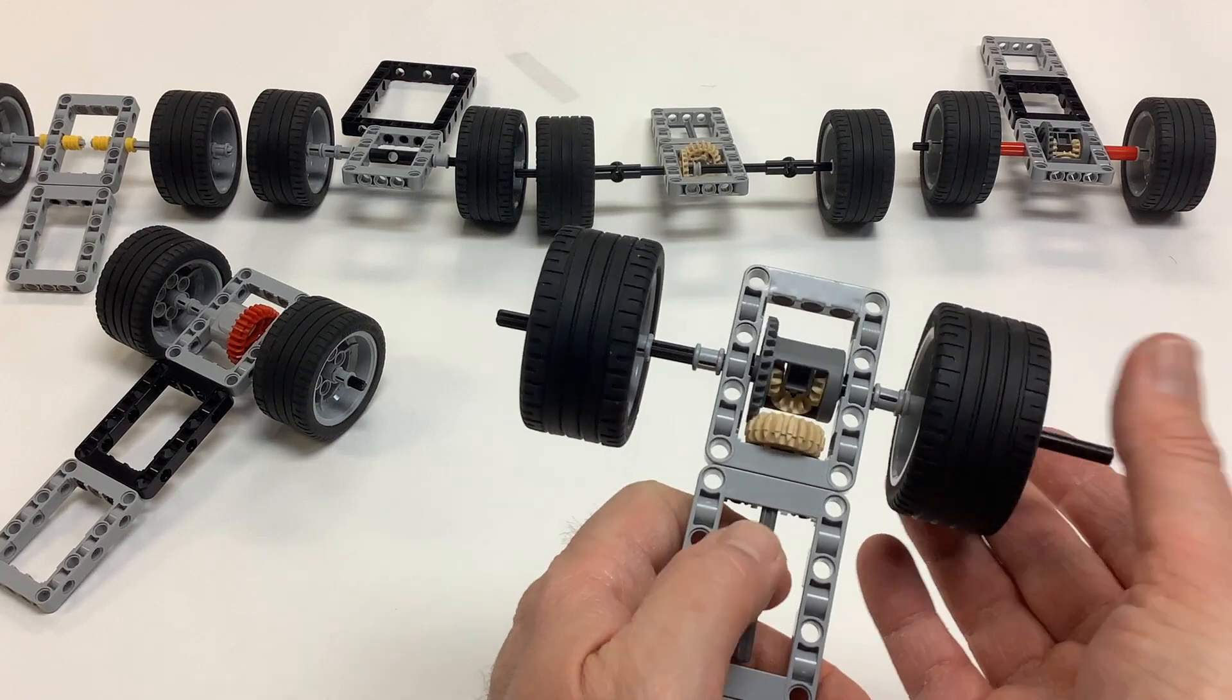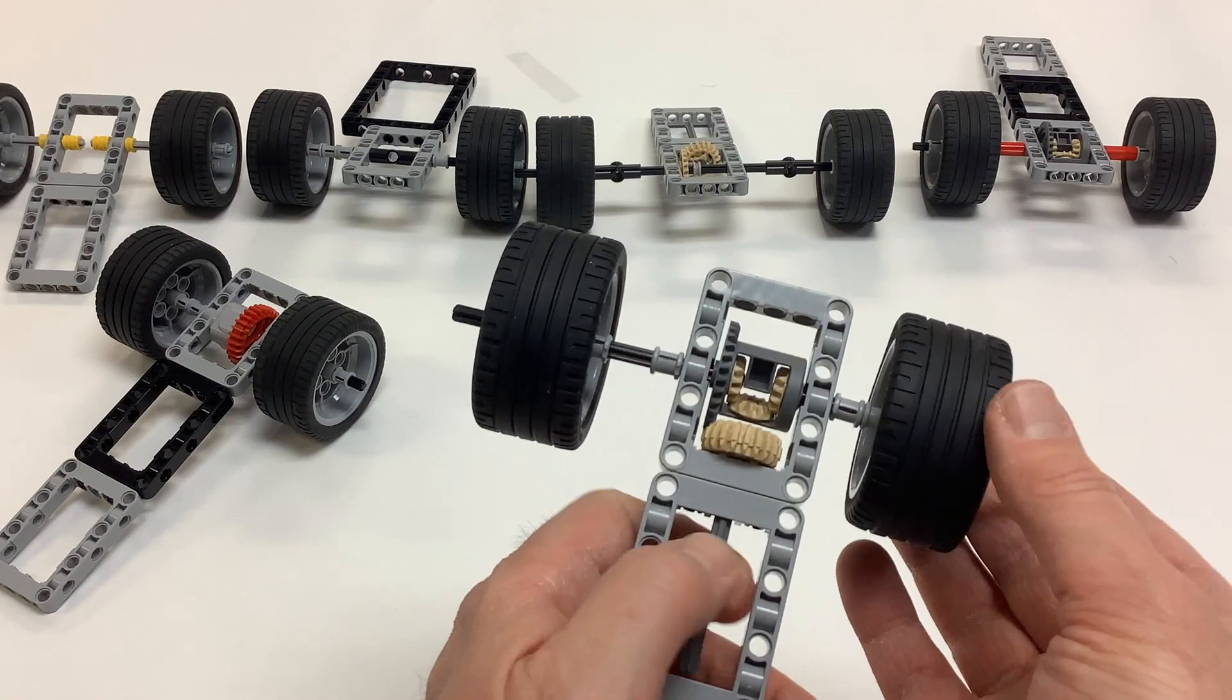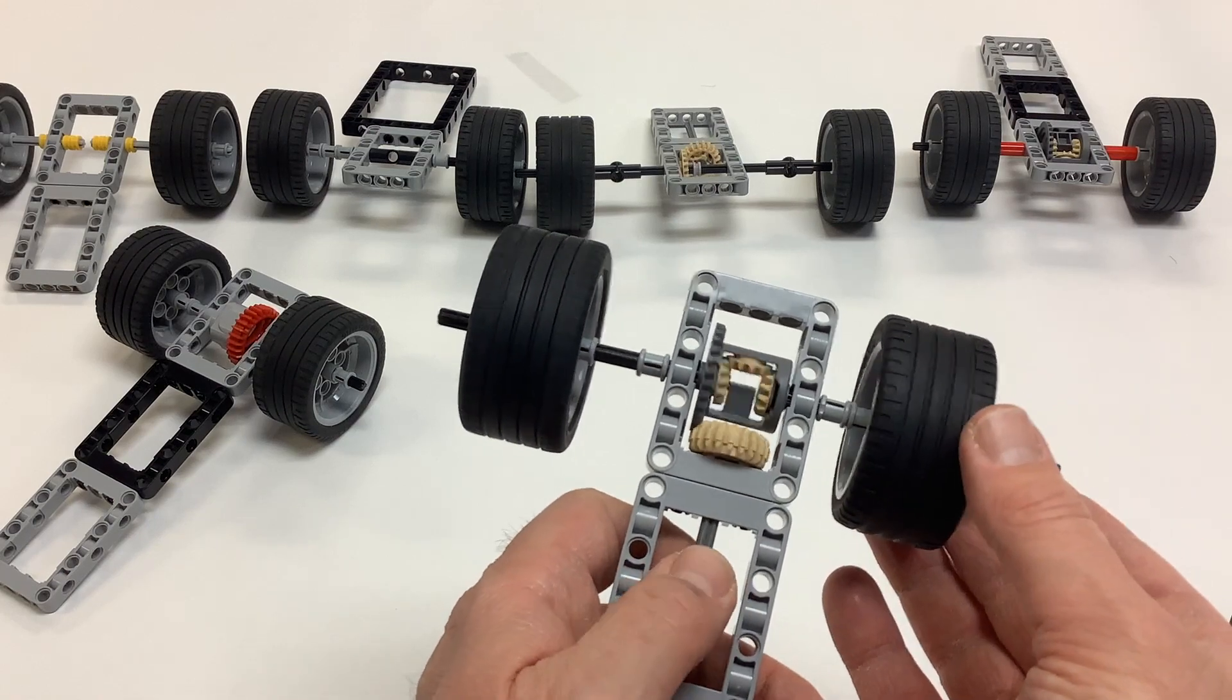If one of them stops or slips because it's getting maybe more friction or is the inside wheel on a turn, the other one's still spinning. How amazing is that?